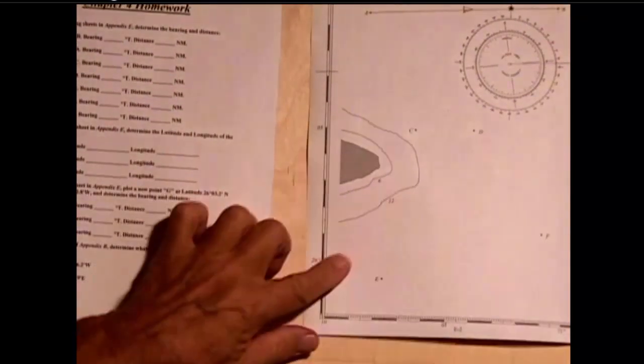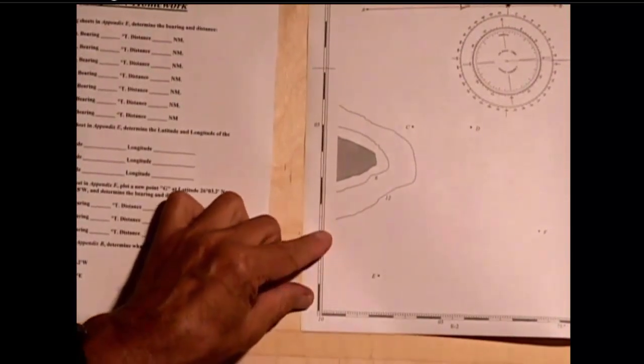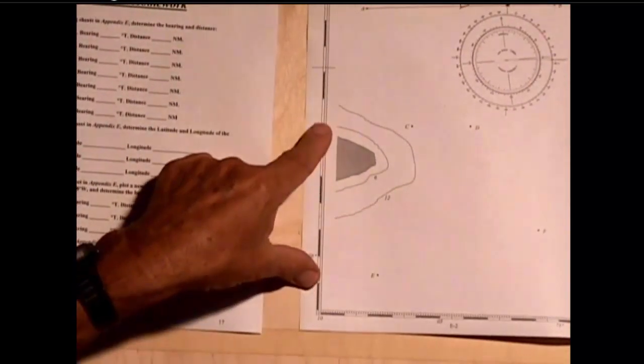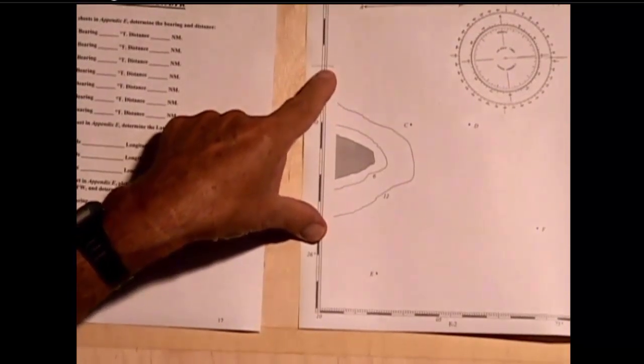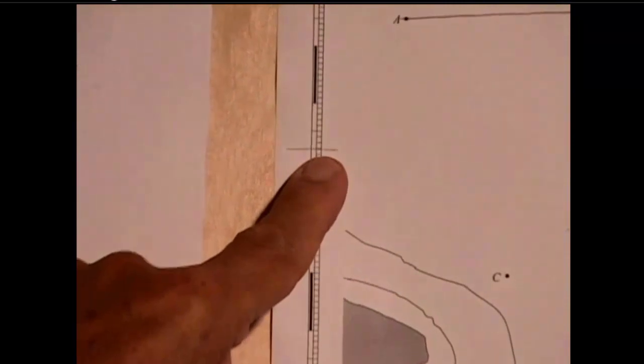And in this case, then, we have 26 whole number degrees, and counting up: 1 minute, 2 minutes, 3 minutes, 4 minutes, 5 minutes, 6 minutes, 7 minutes, 7.2 minutes, or 7.2 nautical miles.